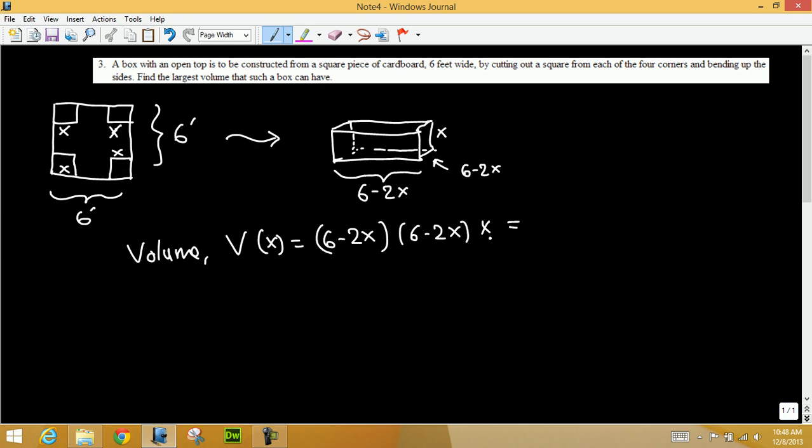Eventually if you do that, you will get 36X minus 24X squared plus 4X cubed. Now this is the objective function and we want to maximize this one.